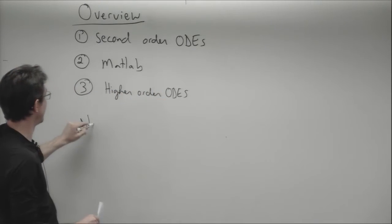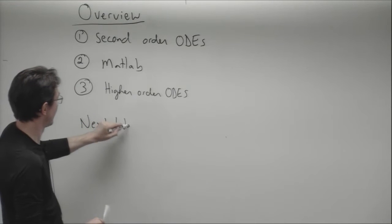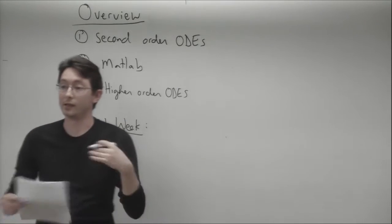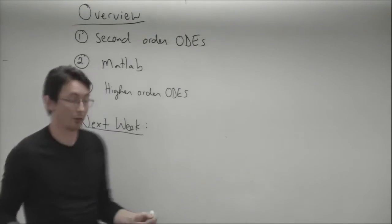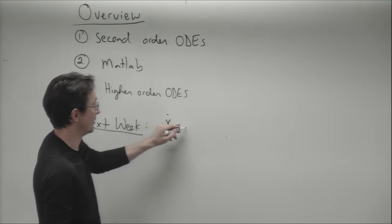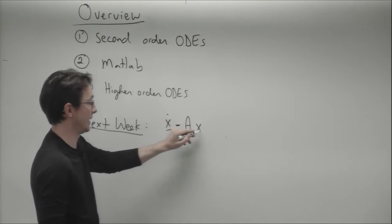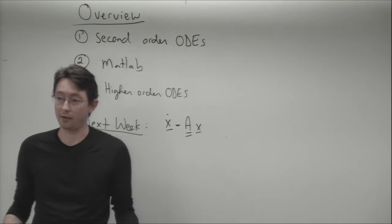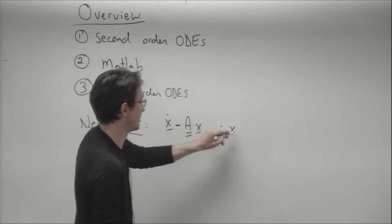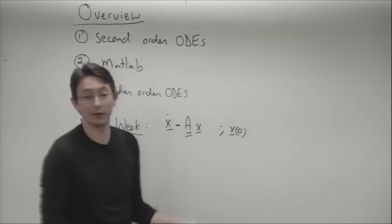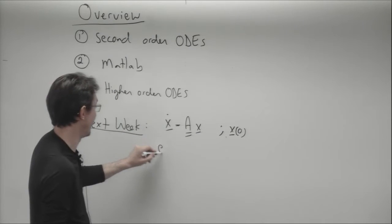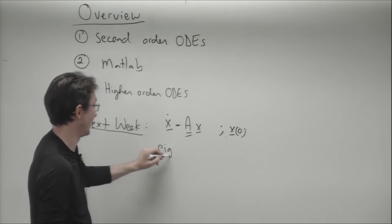So next week we'll deal with matrix systems of differential equations. So if I have a vector x_dot equals a matrix A times my vector x, maybe I have some initial condition vector x_0, we'll learn how to solve these matrix systems of equations using eigenvalues and eigenvectors.